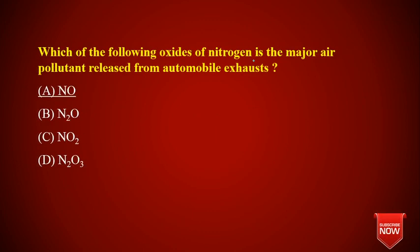Which of the following oxides of nitrogen is the major air pollutant released from automobile exhaust? Nitric oxide (NO) is the most crucial one. Nitric oxide and nitrogen dioxide are the most dangerous air pollutants — they lead to the production of ozone, which we will discuss in a separate lecture. So among the oxides of nitrogen, nitric oxide is the most major air pollutant.